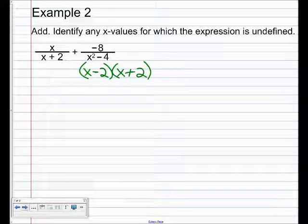And that order does not matter. So now when you look at this denominator and this denominator, you'll see that they have something in common. They both have x plus 2. So in order to have the same denominator, what does this guy need? x minus 2. So I'm going to multiply the bottom times x minus 2.